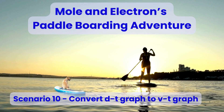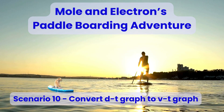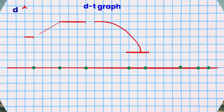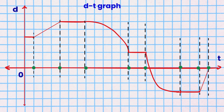Scenario 10: Mole and my pet dog Electron's paddle boarding adventure. Mole and my pet dog Electron are on a paddle boarding adventure as shown in this position versus time graph. Here is the DT graph with the vertical dashed lines to mark the 8 segments of their journey.